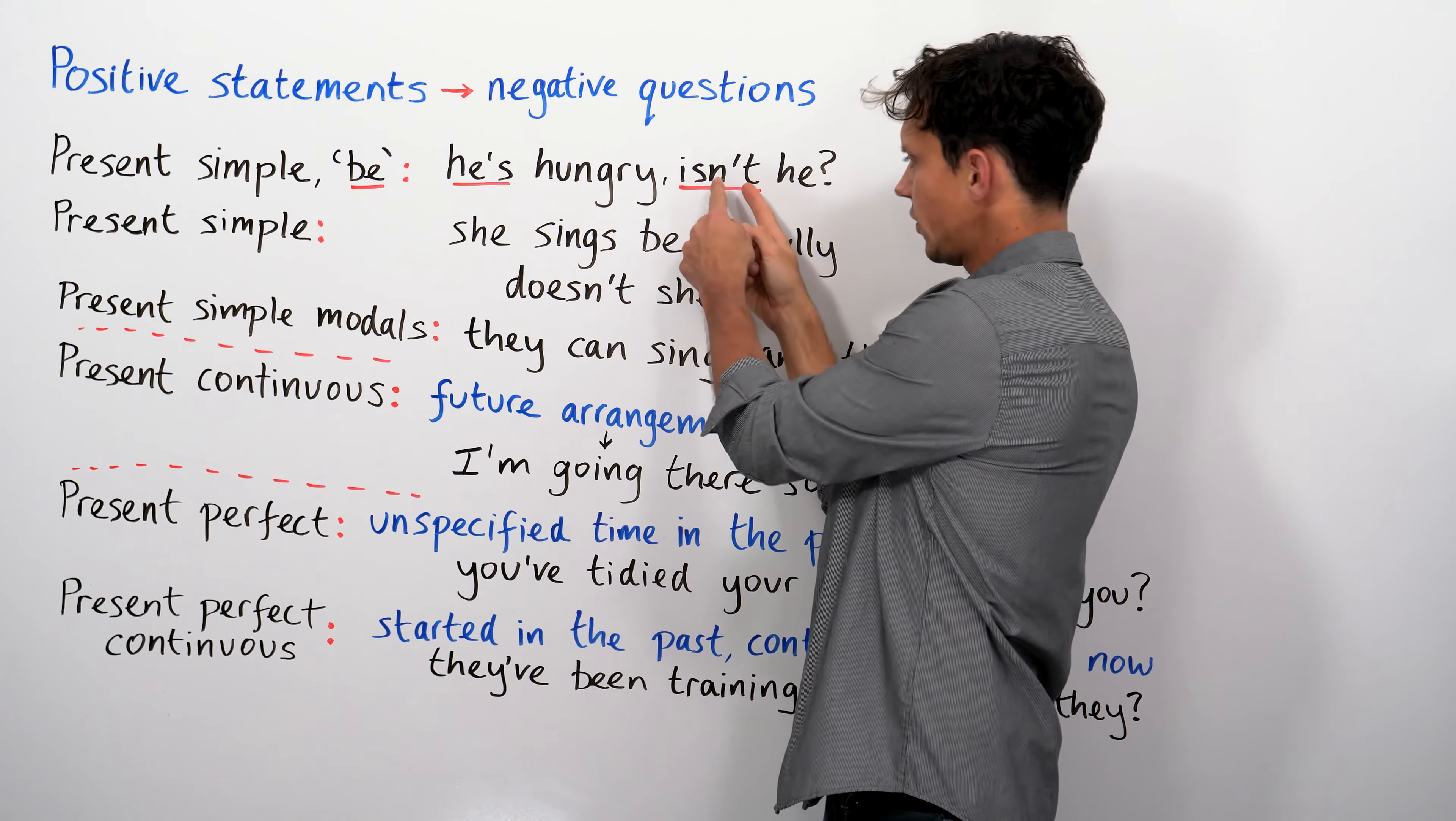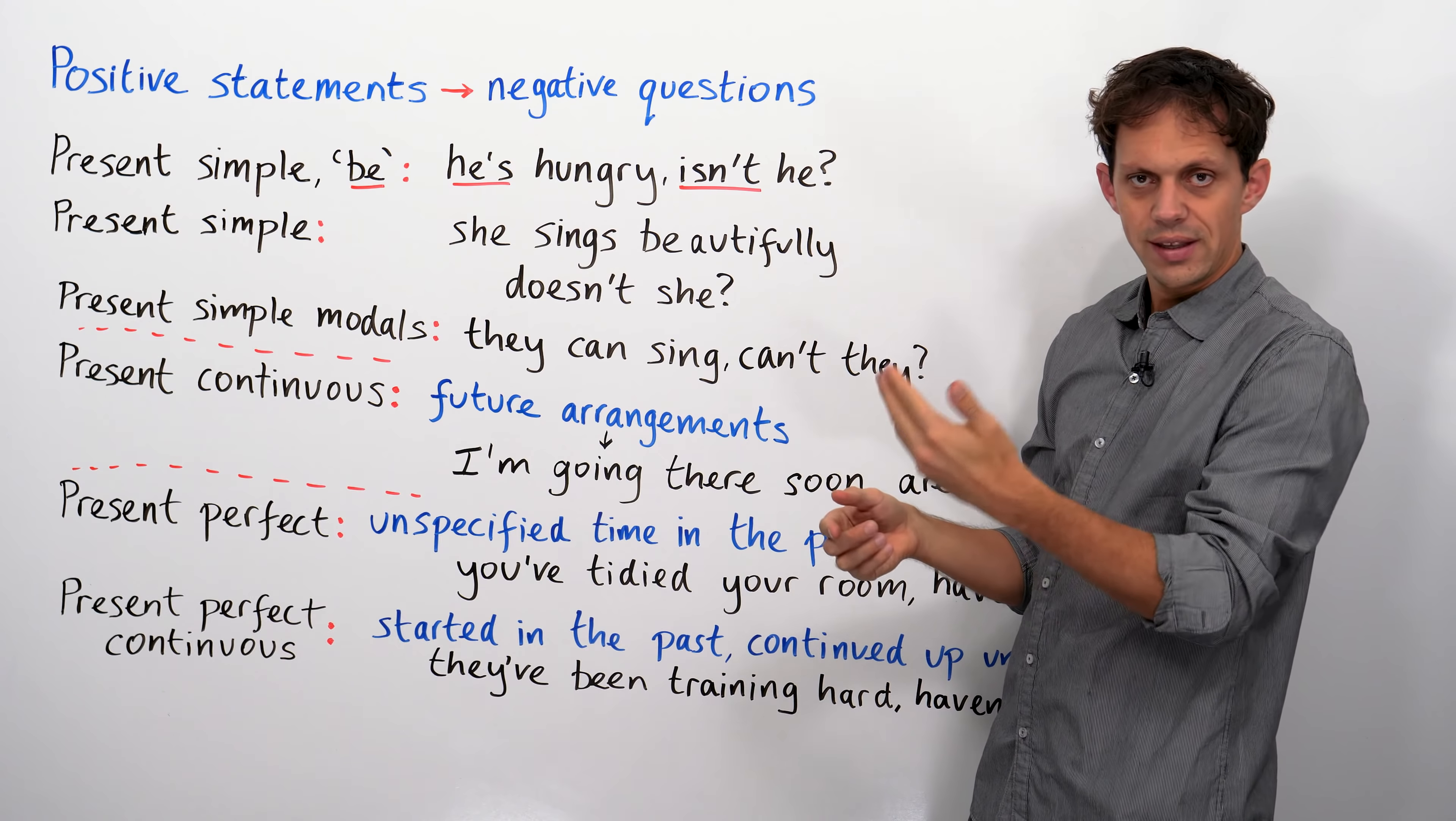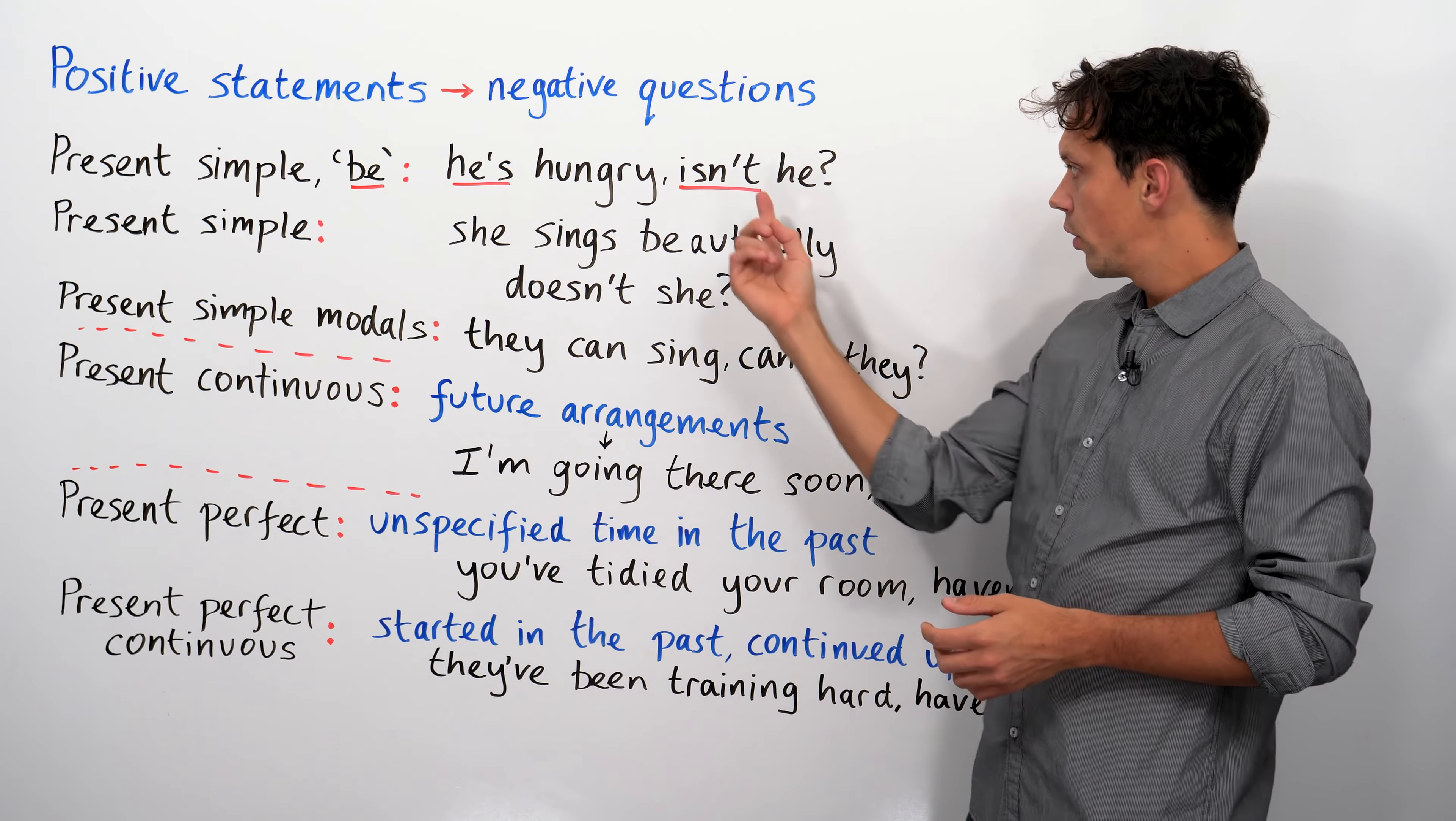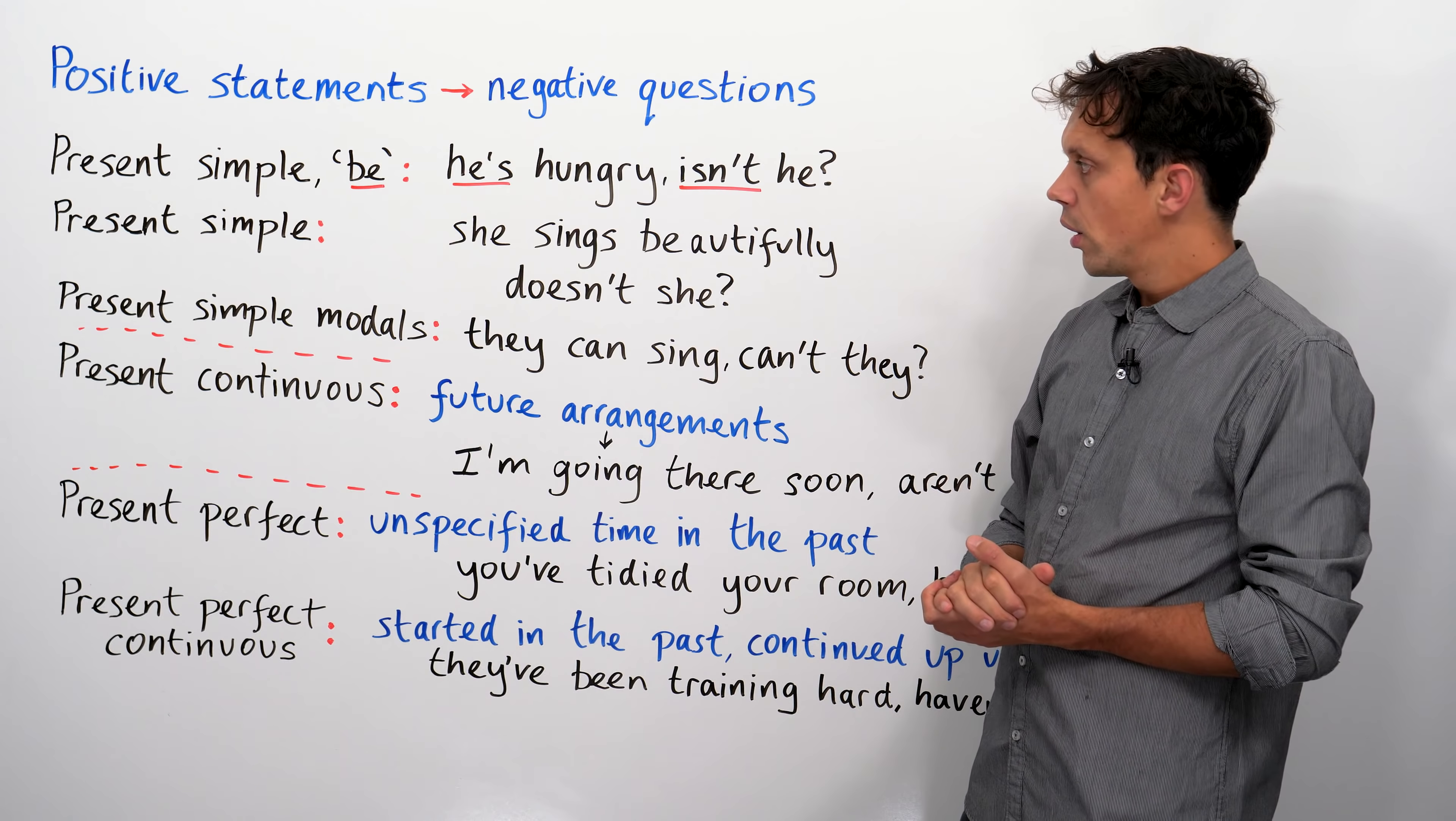So, this bit will change depending on the conjugation of the verb. I am, you are, he or she, it is, we are, you are, they are. So, whatever the verb form for the particular subject, it needs to be there.